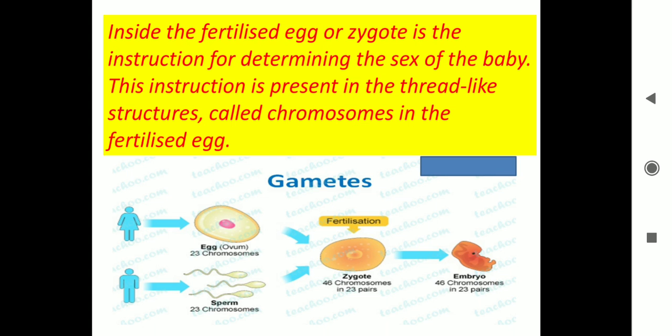An egg from a woman and a sperm from a man each carry 23 chromosomes. Together they form 23 pairs upon fertilization to form a zygote, and finally that zygote develops into an embryo.